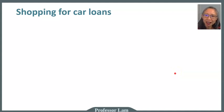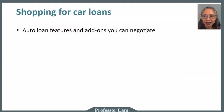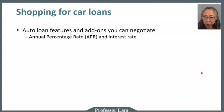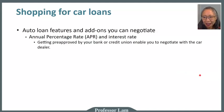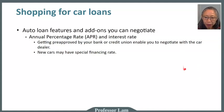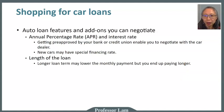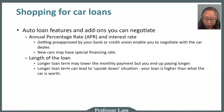Here are some factors to consider when shopping for a car loan. First is the APR, or annual interest rate — try to get pre-approval from your bank or credit union, and when buying a new car, check into special financing offers. The other major factor is the length of the loan. Longer loans can lower your monthly payment, but you end up paying for longer. A longer loan can also lead to an 'upside down' situation, where your loan balance is actually greater than what the car is worth.